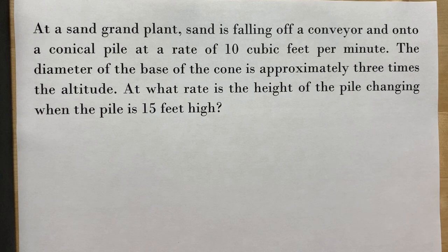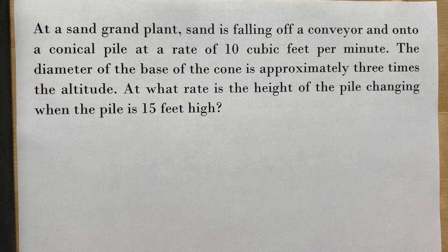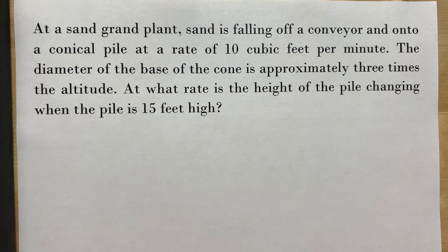At a sand ground plant, sand is pulling off a conveyor and onto a conical pile at a rate of 10 cubic feet per minute. The diameter of the base of the cone is approximately 3 times the altitude. At what rate is the height of the pile changing when the pile is 15 feet high?